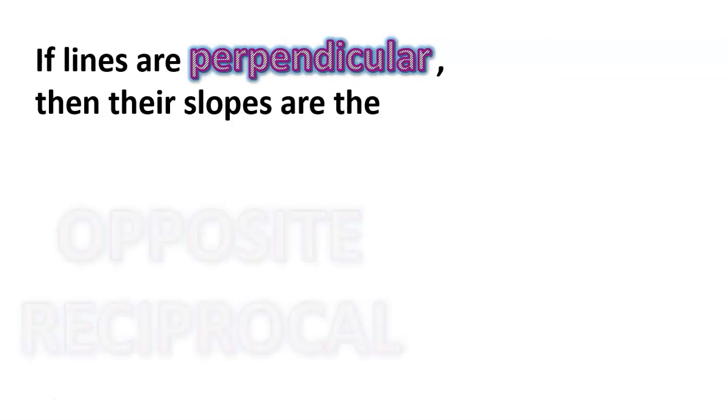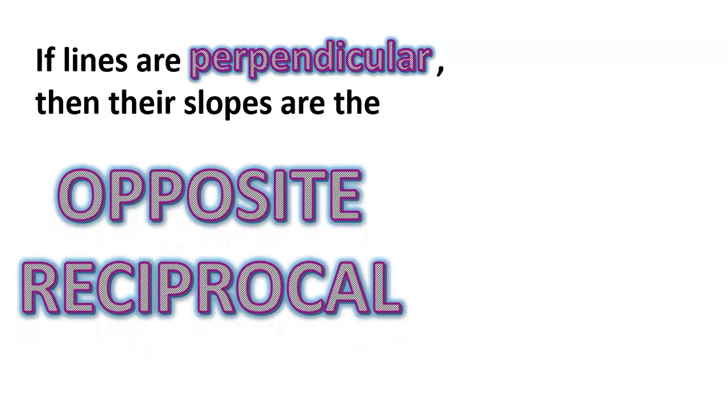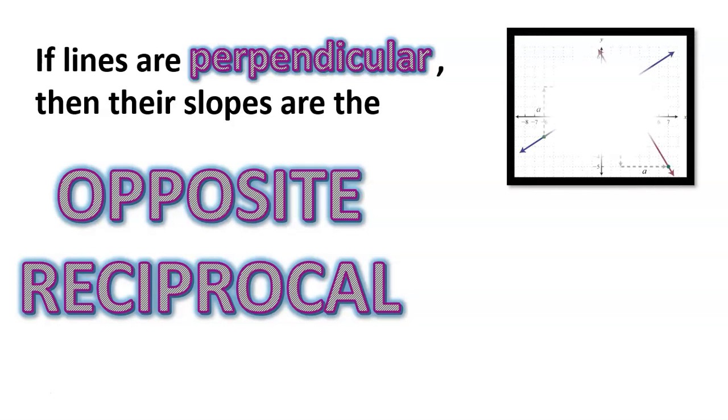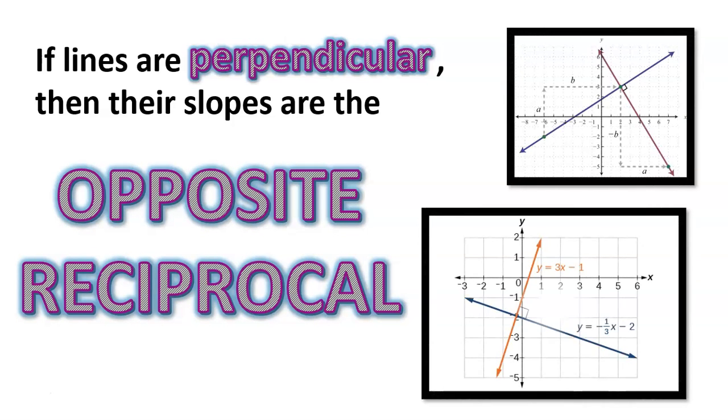If lines are perpendicular, then their slopes are opposite reciprocal, which means we change the sign. If it's negative, we make it positive. If it's positive, we make it negative. And reciprocal means that we flip it upside down.